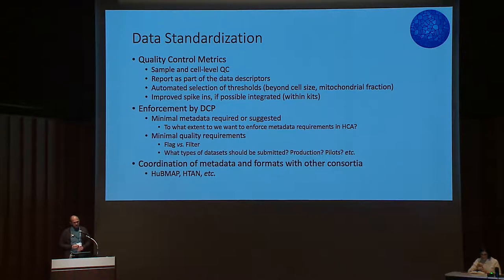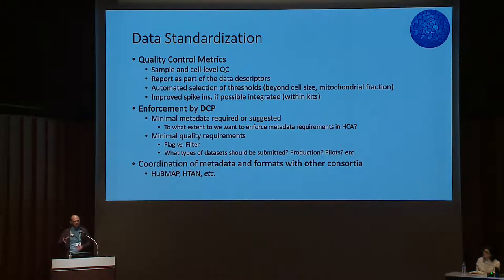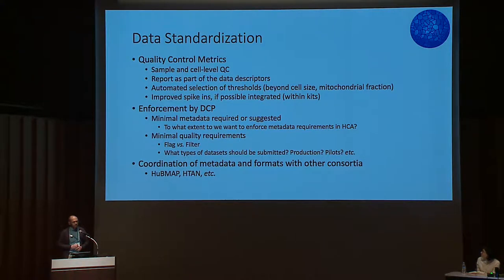Using standard pipelines like Cell Ranger, there's automatic selection of thresholds for cell size. But for other cell characteristics, you might have hard-coded thresholds for mitochondrial fraction or similar. A couple of groups expressed desire to learn these thresholds automatically — looking at distributions of different characteristics and then suggesting selection thresholds or cell quality scores based on combinations of these predictors.